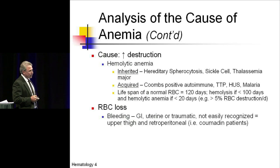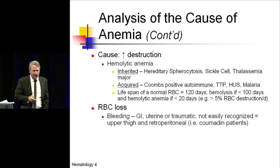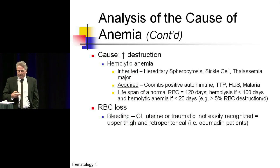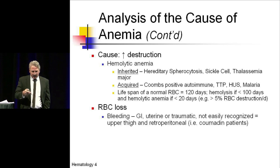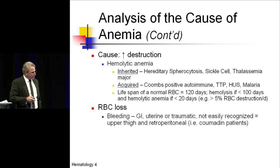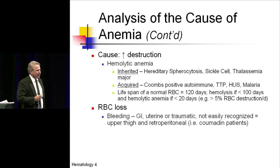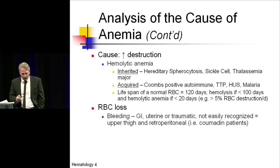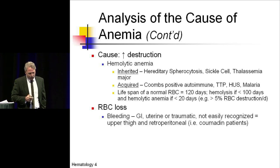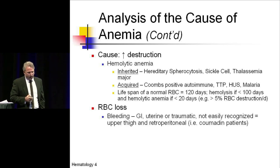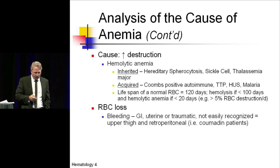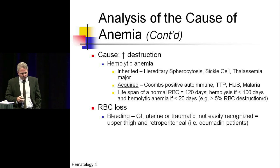You can also have destruction, which is hemolytic anemia, coming up in about 10 slides. As a nice category, it's important to recognize these can be inherited causes such as spherocytosis and thalassemia, and acquired causes such as Coombs-positive autoimmune hemolytic anemia.